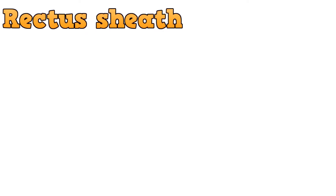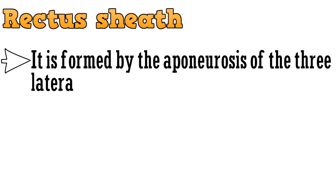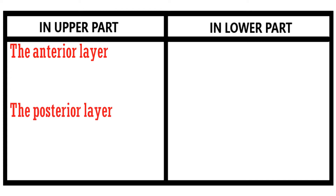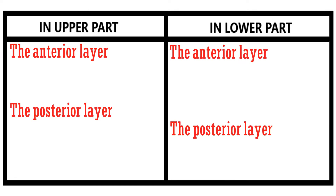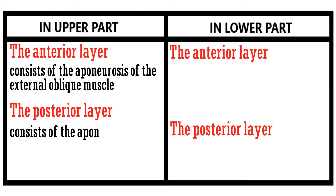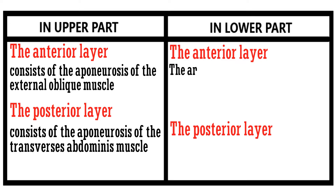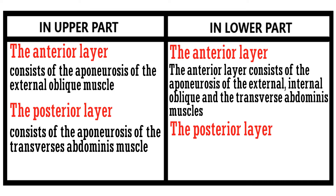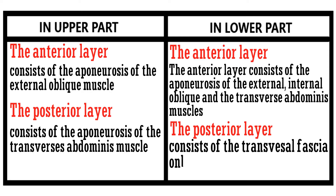Coming to the last part, that is the rectus sheath. It is formed by the aponeurosis of the three lateral abdominal muscles. It is divided into two parts, the upper and the lower part, and both parts have anterior and posterior layers. The anterior layer in the upper part consists of the aponeurosis of the external oblique muscle, and the posterior layer consists of the aponeurosis of the transverse abdominis muscle. The anterior layer of the lower part consists of the aponeurosis of the external, internal oblique, and the transverse abdominis muscle, and the posterior layer consists of the transverse fascia only.